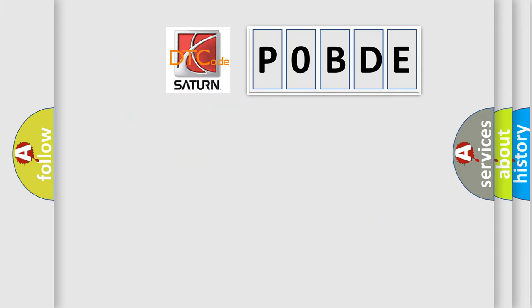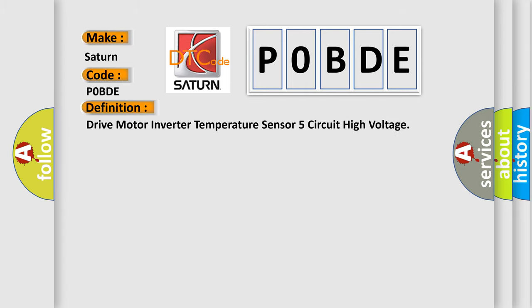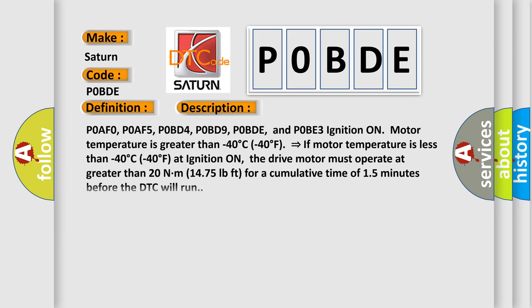So what does the diagnostic trouble code P0BDE interpret specifically for Saturn car manufacturers? The basic definition is drive motor inverter temperature sensor 5 circuit high voltage. And now this is a short description of this DTC code: P0AF0, P0AF5, P0BD4, P0BD9, P0BDE, and P0BE3. Ignition on motor temperature is greater than minus 40 degrees Celsius (minus 40 degrees Fahrenheit).